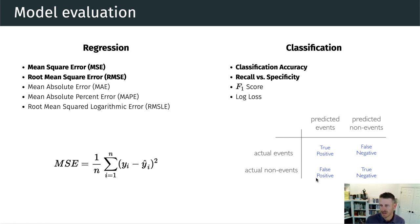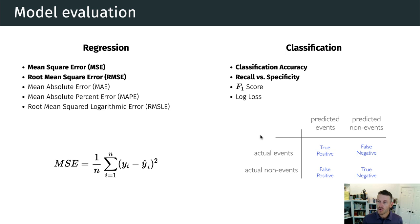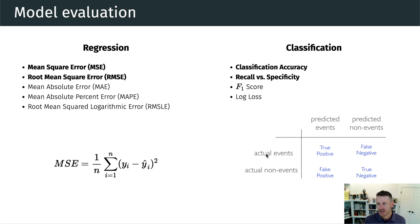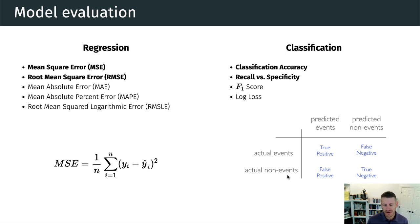With a classification model, we can take the predicted output versus the actual output and create what's called a confusion matrix. We can measure when our model predicts something is going to happen but it doesn't — that's a false positive. Or when our model predicts something is not going to happen but it did — that's a false negative. Recall versus specificity just emphasizes different parts of the confusion matrix depending on what we're looking for.